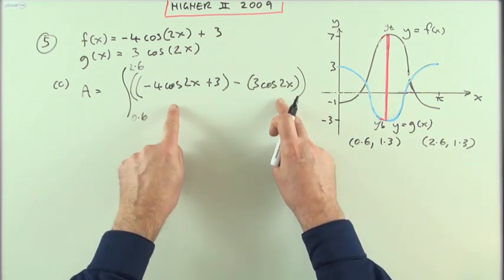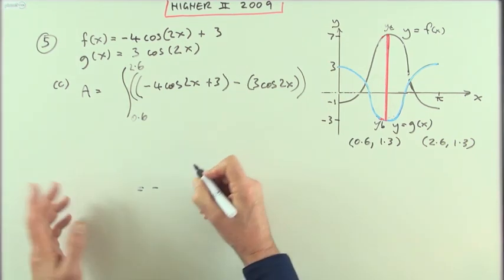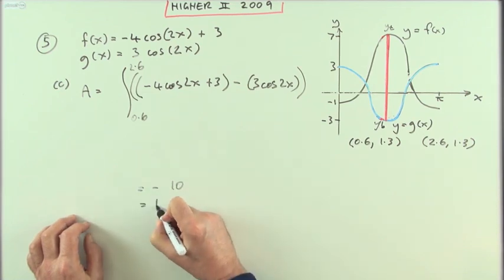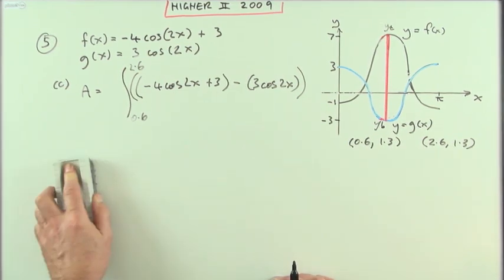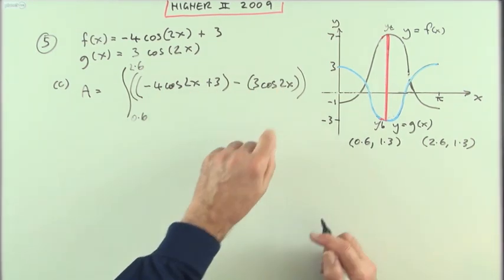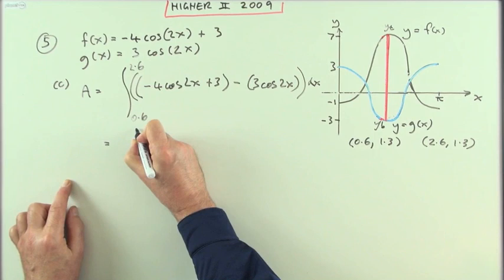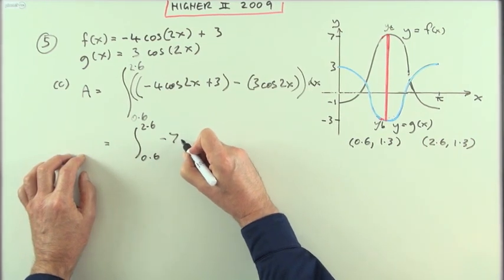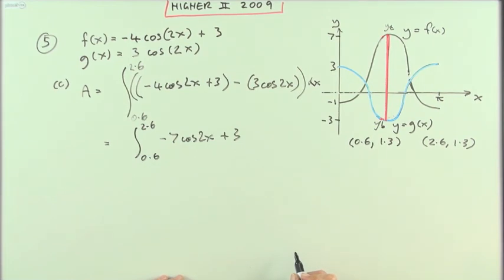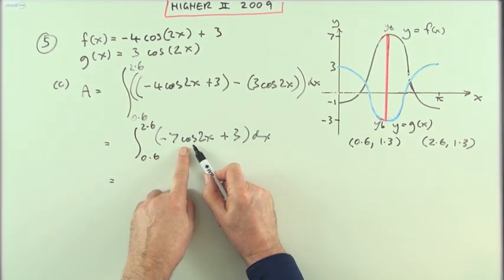If you have them the wrong way around, the integral will turn out negative, and you don't want to write 'equals negative 10, must be positive, therefore equals 10' — that won't work. You'd need some other statement. Since it's an area it has to be positive, so just get it down properly to begin with: top take away bottom. The integrand simplifies to negative 7cos(2x) plus 3 — not 7cos(2x) minus 3 — times dx.